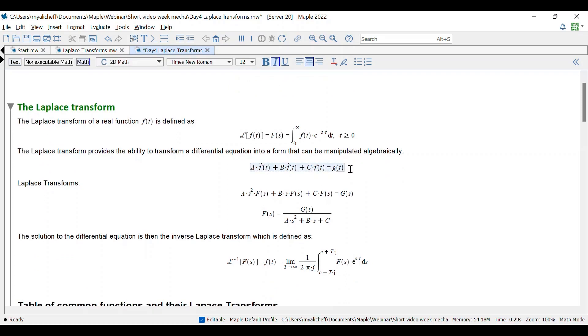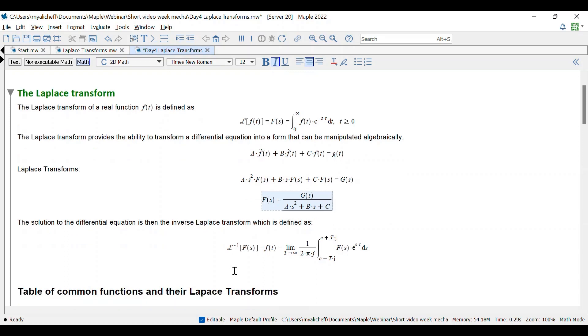Let's say we have this differential equation. Then we are using the Laplace transform to get F of S. And then the solution of this differential equation will be the inverse of the Laplace transform. While here, C is a constant that's greater than the real parts of all the singularities of F of S, and J is the square root of minus one.